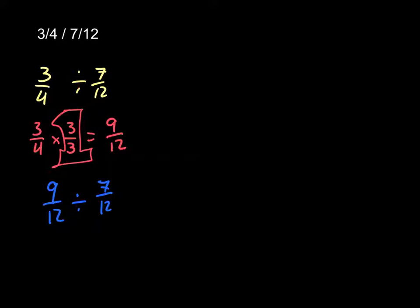So we started by rewriting it. We multiplied it by our giant 1, 3 over 3, because we knew we wanted 12. And we got 9 twelfths. And once we got here, we saw that we have 9 twelfths divided by 7 twelfths. And if you're thinking about it, you might look at it and say, I know that 9 divided by 7 is not going to get me a whole number.